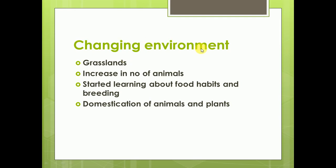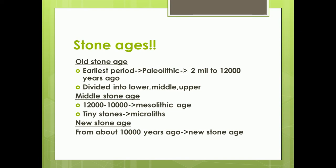After some time, environmental changes caused temperatures to rise, grasses grew, and grasslands expanded. This increased the number of animals like deer, antelopes, and goats. Early humans began learning about the food habits and breeding of animals, which slowly led to the domestication of animals. They also observed that seeds could grow into plants, so they started collecting seeds, which eventually led to agriculture. These developments began during the Middle Stone Age.